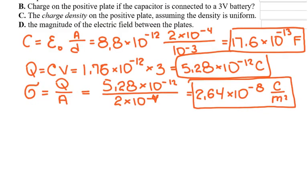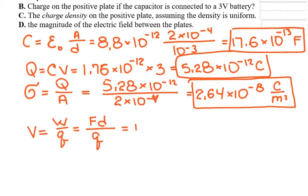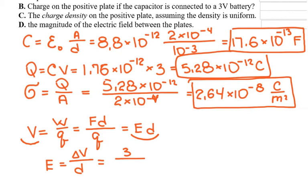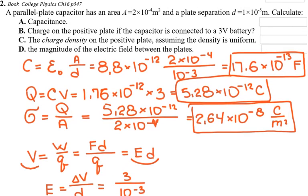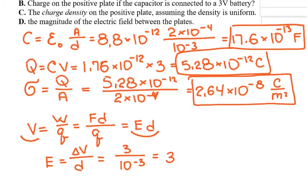For the last part, find the magnitude of the electric field between the plates. Using the relationship that voltage equals electric field times distance, the electric field equals potential difference divided by distance between plates: 3 volts divided by 10⁻³ meters equals 3000 newtons per coulomb.